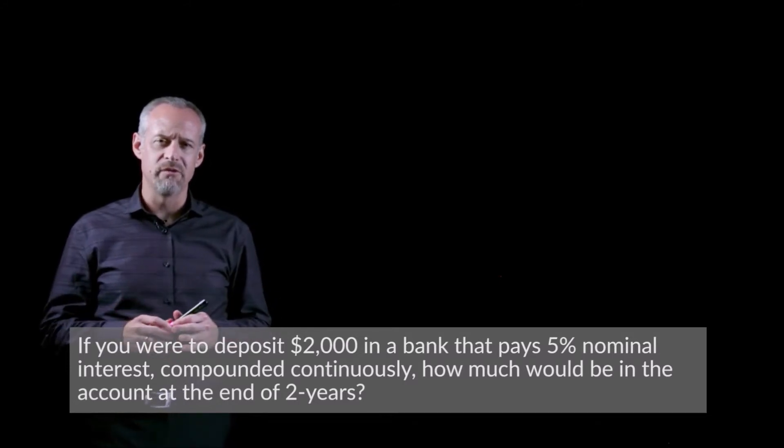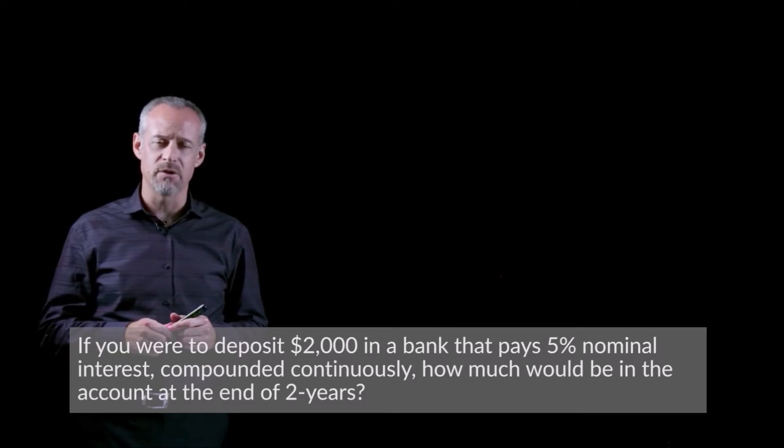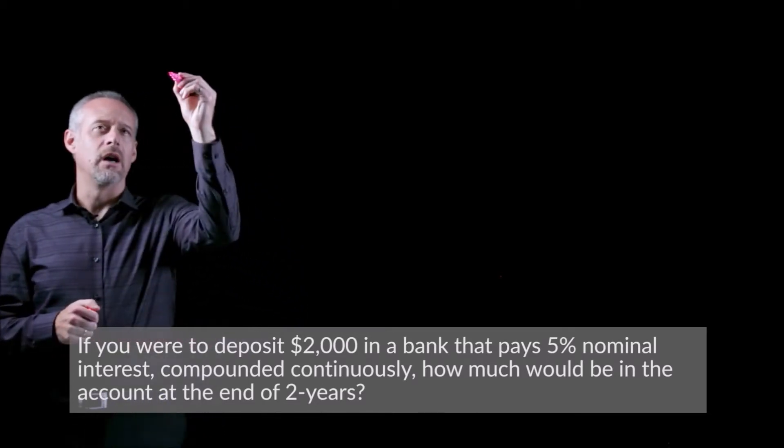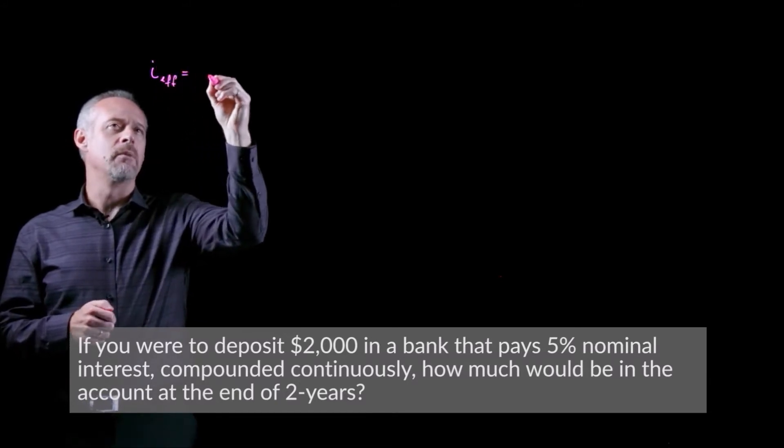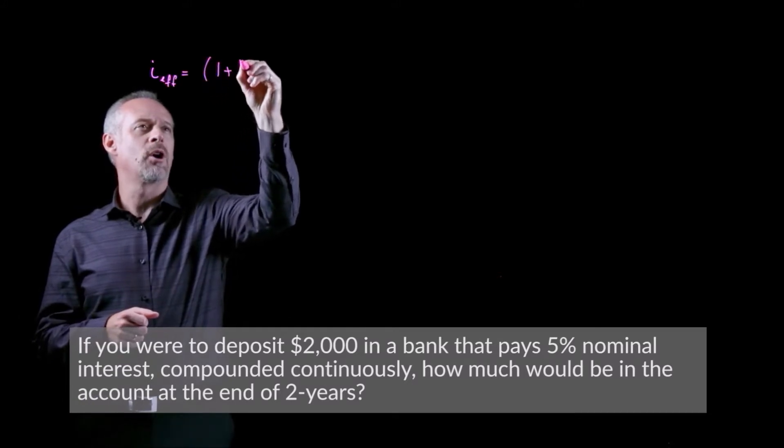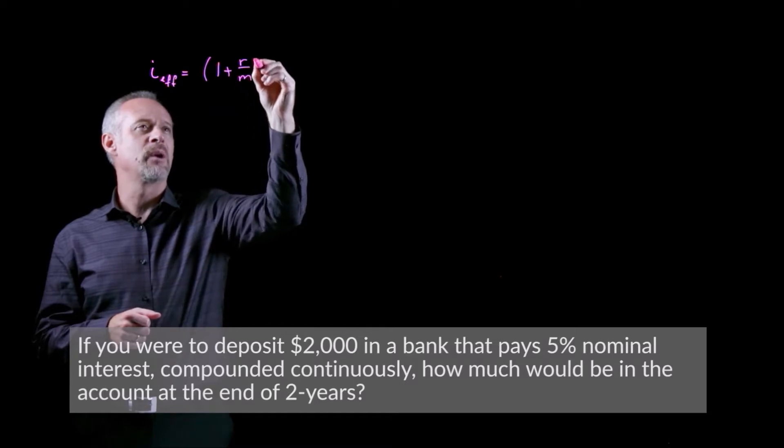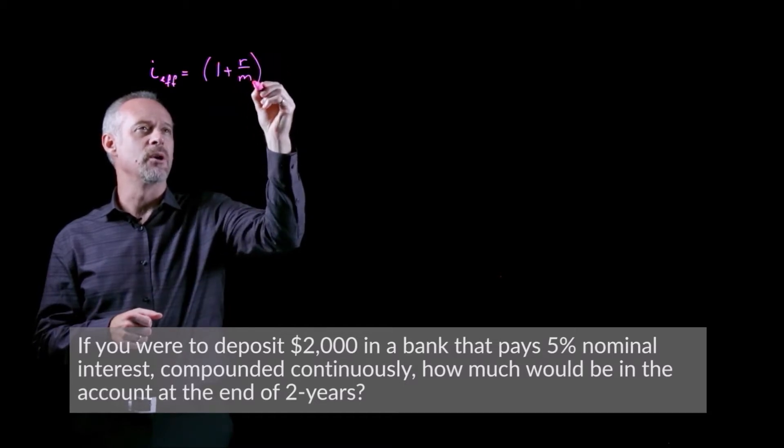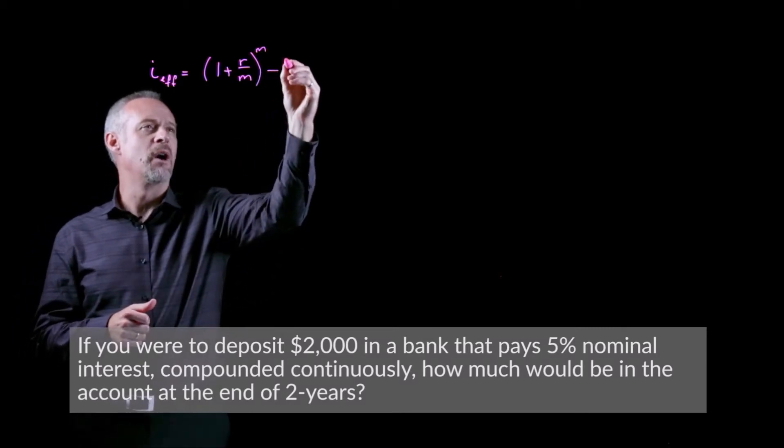If you look at the previous video where we introduced the idea of nominal and effective interest rates, you may recall writing a formula like this, where the effective interest rate was equal to 1 plus r, the nominal rate, divided by the number of compounding periods in the year, raised to the power of the number of compounding periods minus 1.